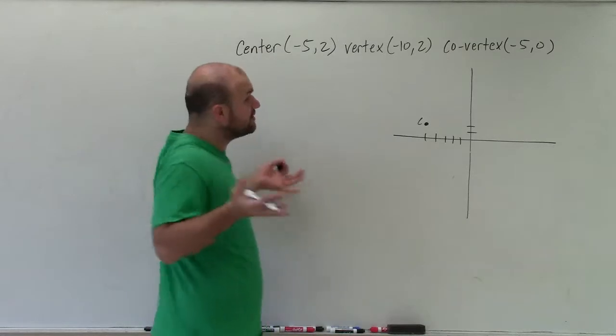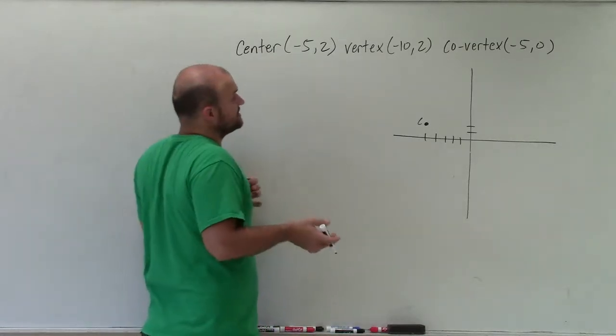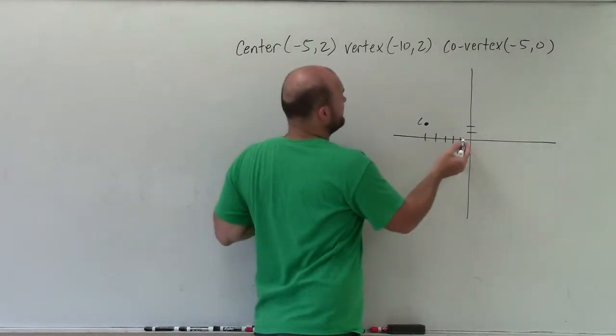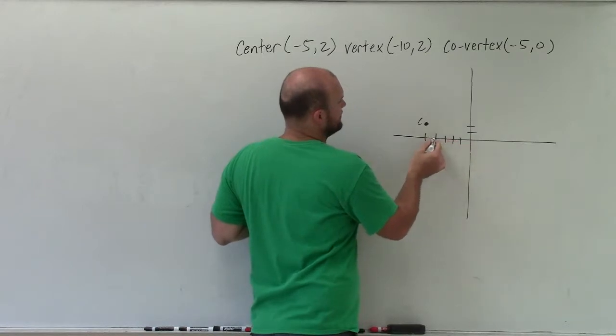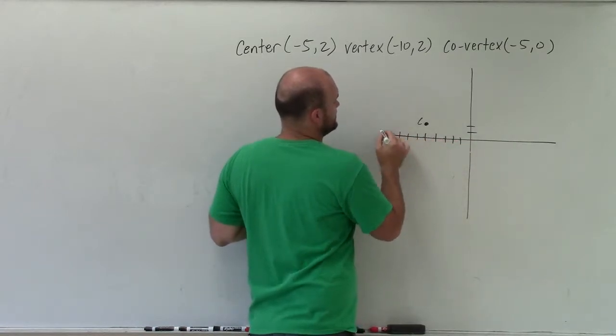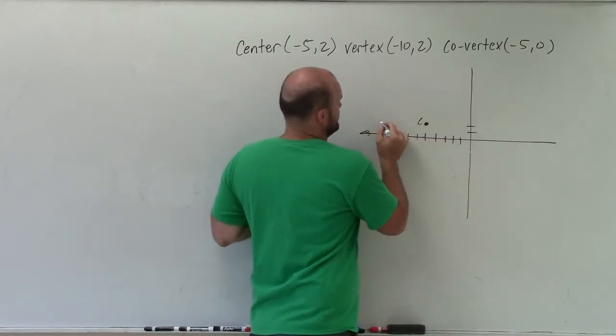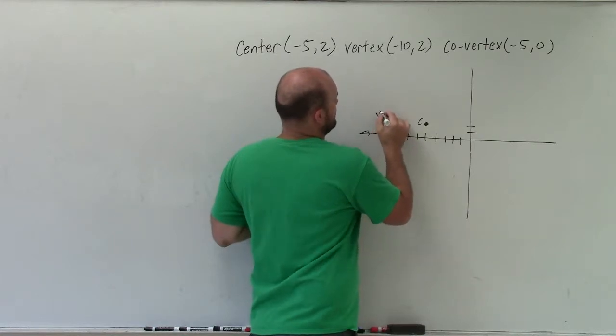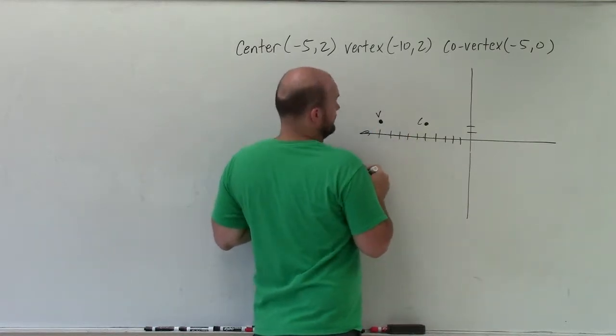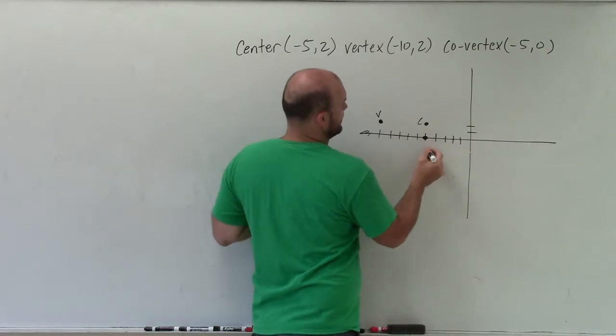So the vertex, which is one of your vertices, is at (-10, 2). And your co-vertex is at (-5, 0).